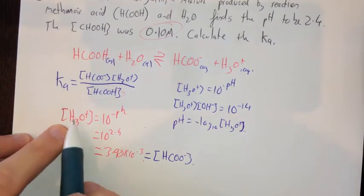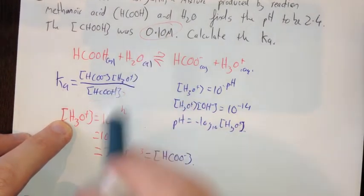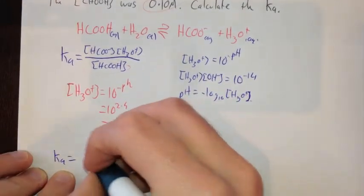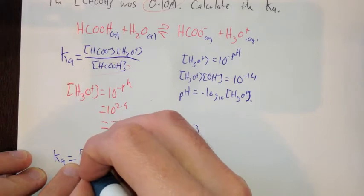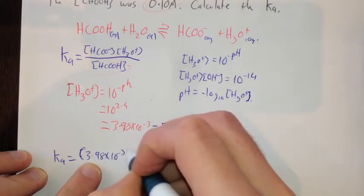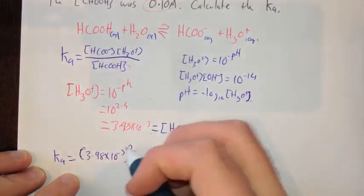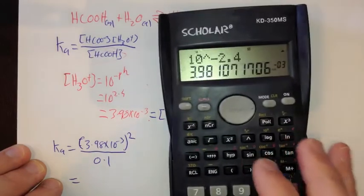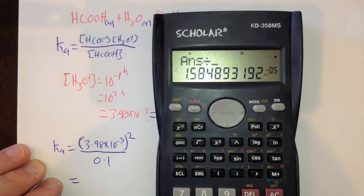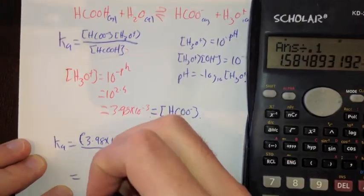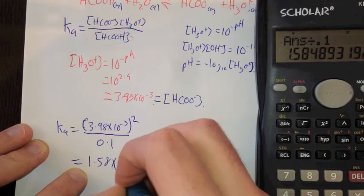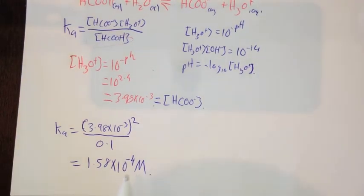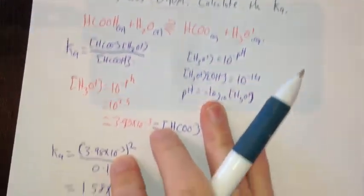But now, luckily, I've got concentration of hydronium, I've got concentration of methanoic acid, and I've got concentration of this. So I can go my Ka is equal to, well I'll just bang it in here, 3.98 times 10 to the negative 3 squared, because these two are the same, I can just go it's that squared, divided by 0.1. So therefore my Ka value is, I'll just square that, divide that by 0.1, and I get 1.58 times 10 to the power of negative 4. And that is molar for my unit for Ka. There we have it. Ka for this methanoic acid is this.